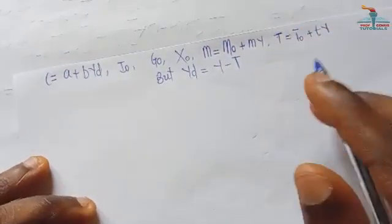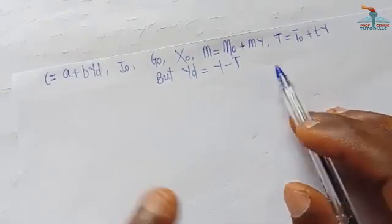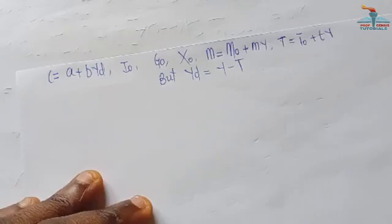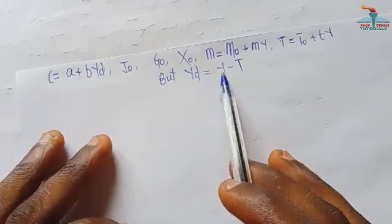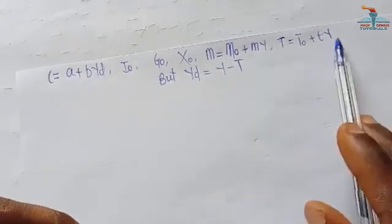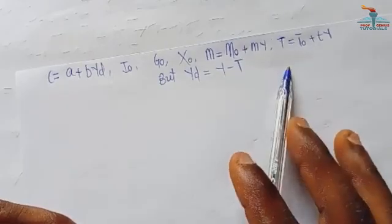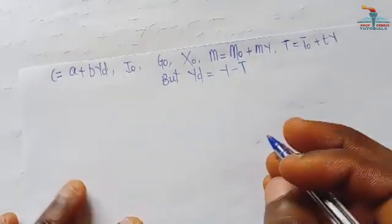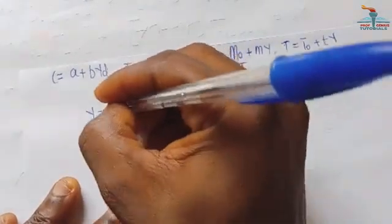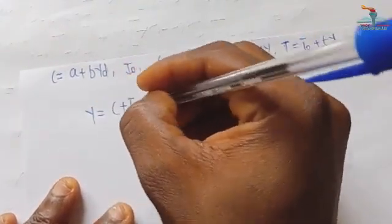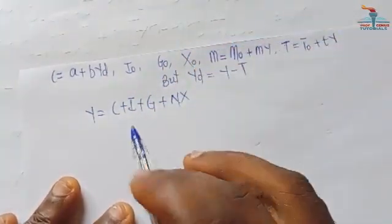We are going to calculate the income of an economy and the multiplier. We will use the expenditure approach to first calculate the multiplier. The formula for income using the expenditure approach is Y = C + I + G + NX, where NX is net export.